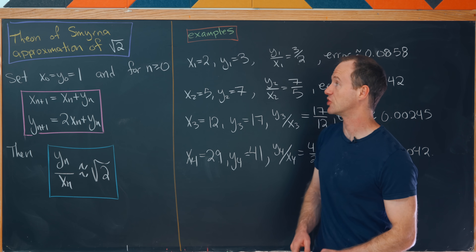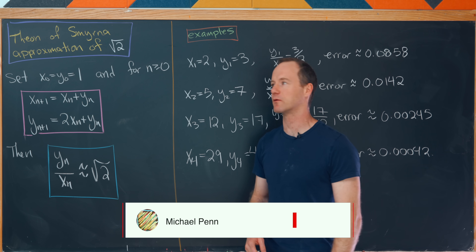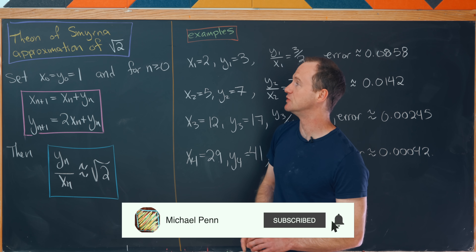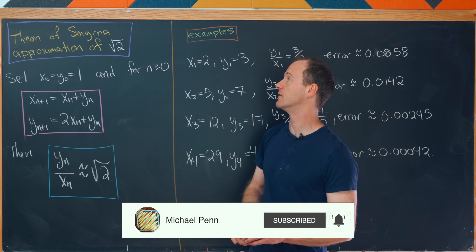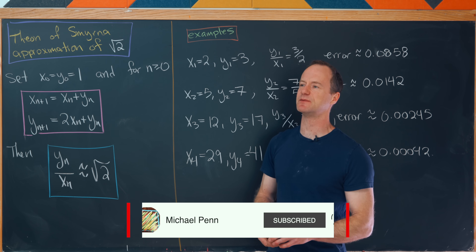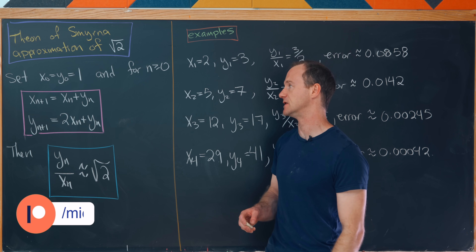Today we're going to look at an ancient Greek method for approximating the square root of 2. This is due to Theon of Smyrna, and it makes this approximation via recursively defined sequences.